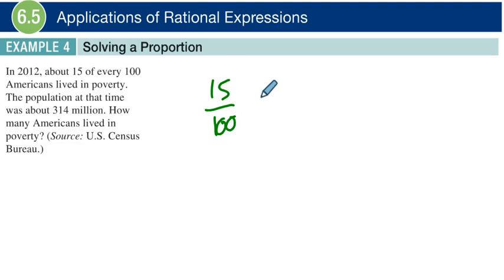That's the same thing as saying 15%, right, or 0.15. If you were to do 15 divided by 100 on your calculator, that's 0.15, and that as a percentage is 15%. So we can rewrite this data and say about 15% of Americans lived in poverty.